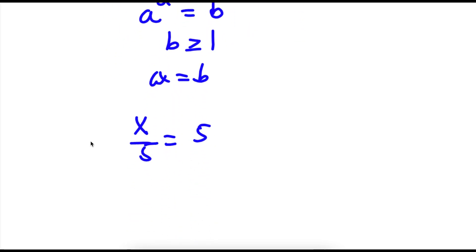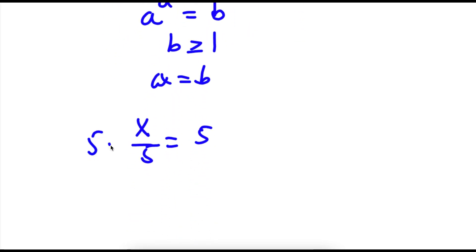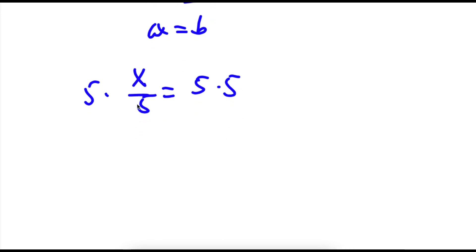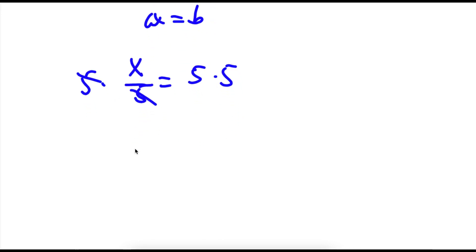Now if I multiply both sides by 5, these two cancel out. x is equal to 5 times 5, which is 25.